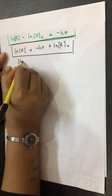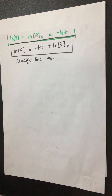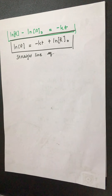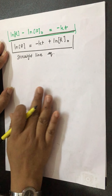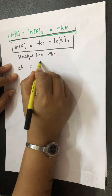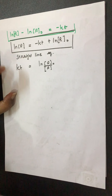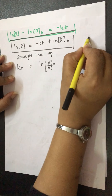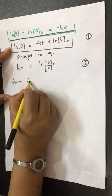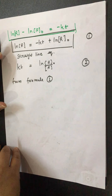The formula becomes ln R minus ln R₀ equals minus kT, which can also be written as ln R equals minus kT plus ln R₀. This is a straight line equation and is known as the integrated rate law for the first order reaction. We can also rearrange this to kt equals ln R₀ over R — this is formula number 2.